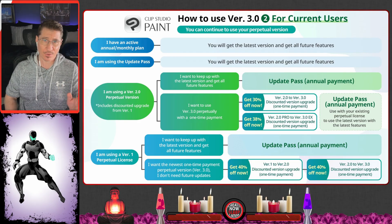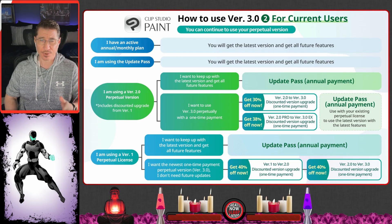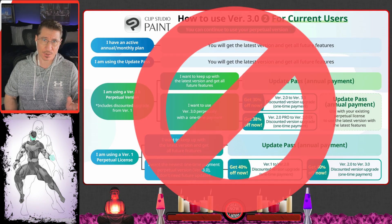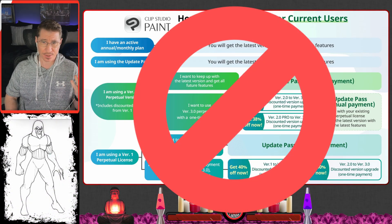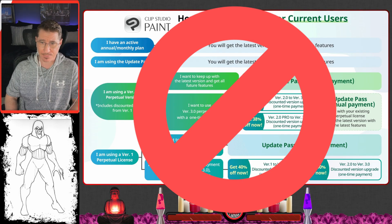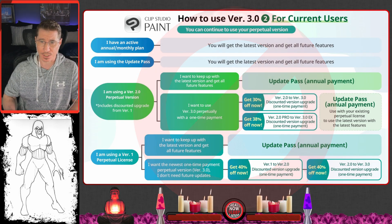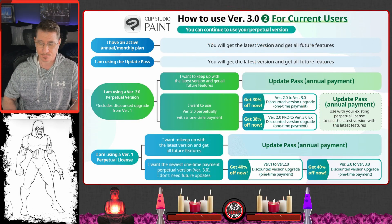This is exactly how not to communicate to your customers how your new license model works. This thing looks like a map to the Batcave or something, let alone a license model.